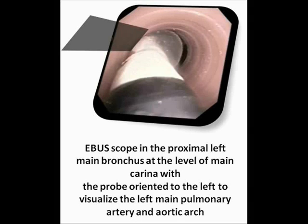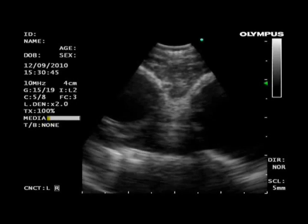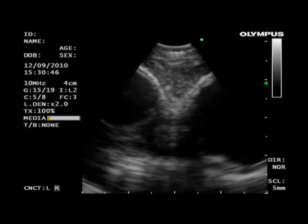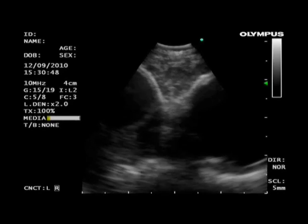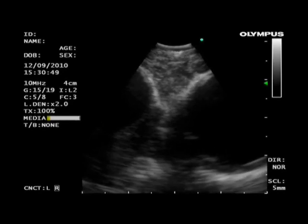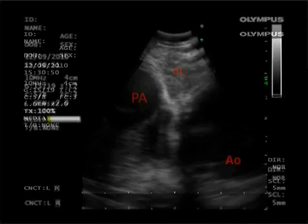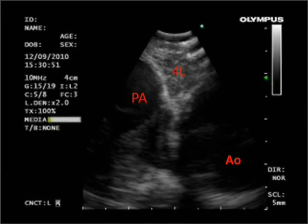As the scope is moved into the left main bronchus and oriented laterally, the left main pulmonary artery and aortic arch come into view. This video shows a 4L lymph node above the pulmonary artery and below the aortic arch.